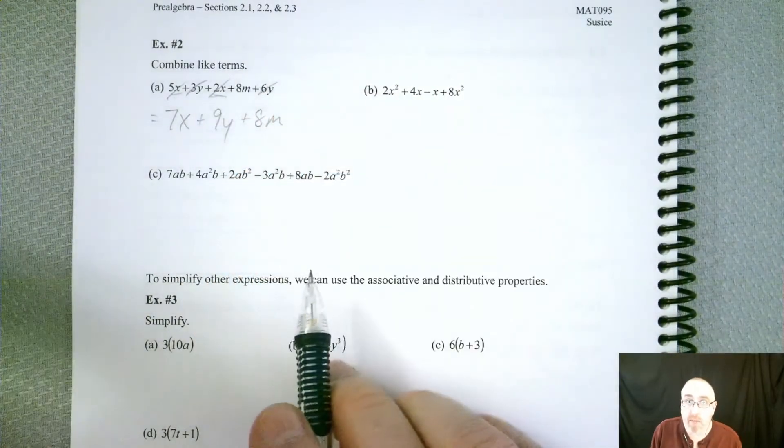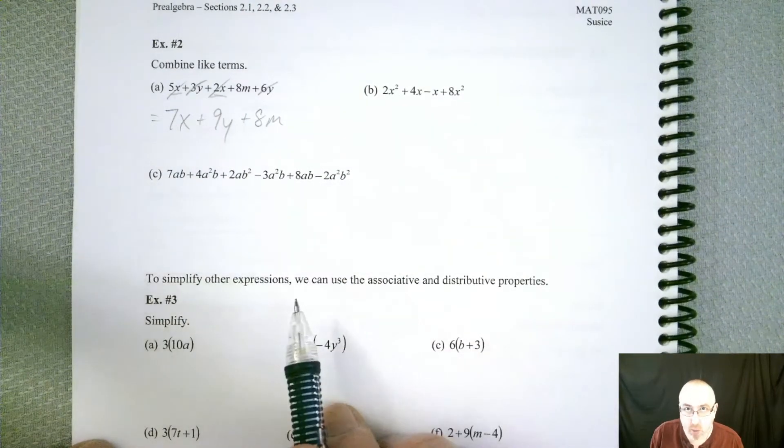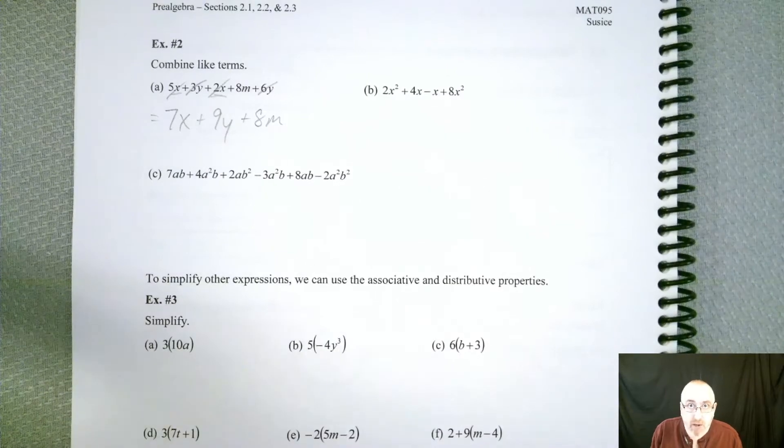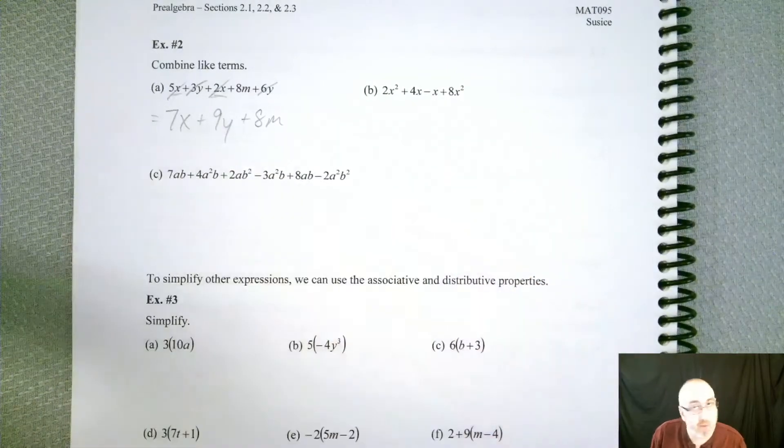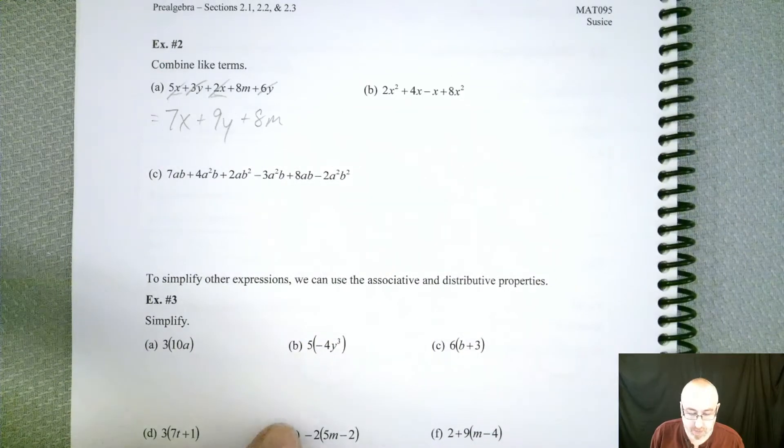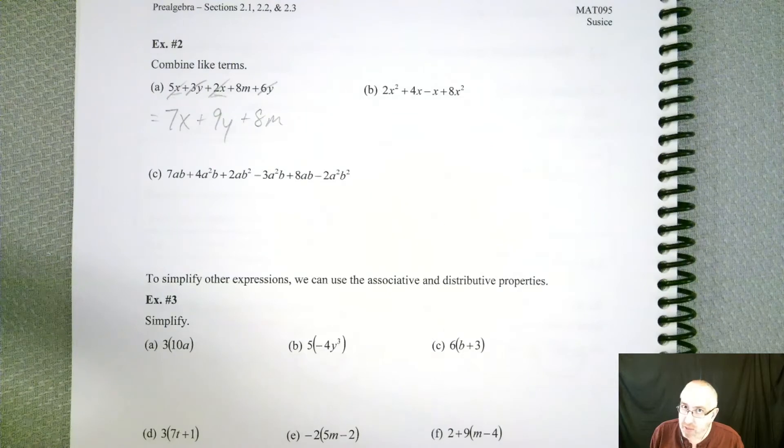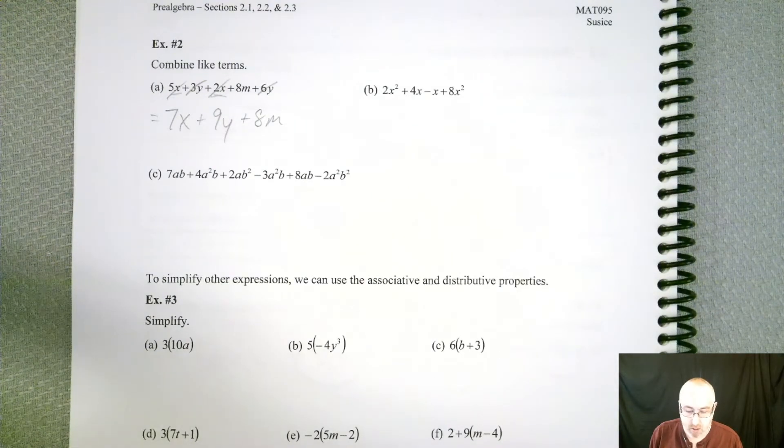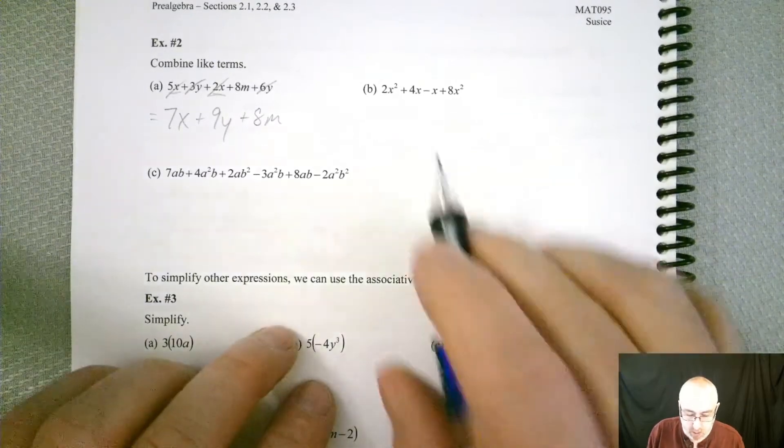Now, the other thing to keep in mind is order is not important. So you could have rearranged these any way you want. As long as they're separated by addition, you're good. So if you want to put the 8m first, go for it. It's still the same answer. Now, my math lab might be picky about it, but I don't believe so. They should be able to accept the variety of answers. But let me know if they're picky.